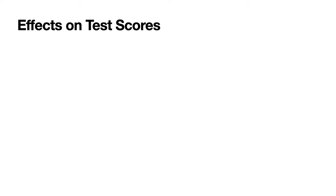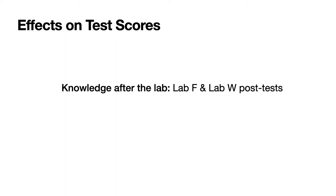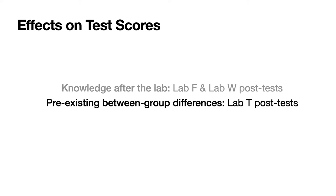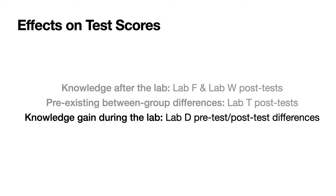First, the effects of live programming on test scores. We ran three two-sided t-tests to compare test scores between the two groups in each lab. For labs F and W, we compared post-test scores between the group using PBS and the group using PBNO. For lab T, where both groups used the same environment, we compared post-test scores to detect any pre-existing between-group differences. For lab D, we compared the pre-test post-test score differences between groups. For all t-tests, we set the threshold to be 0.05, and all p-values are beyond the threshold — we found no statistically significant differences between the groups in any of the tests.